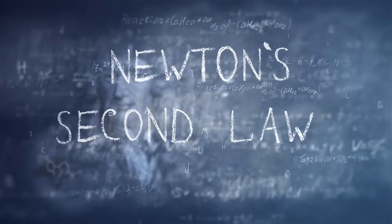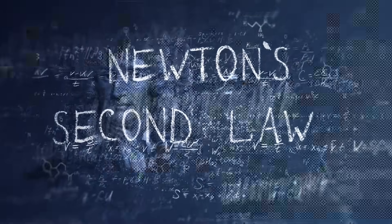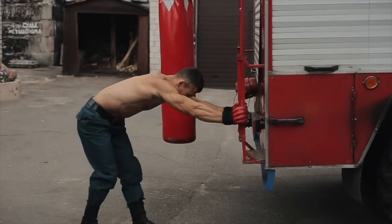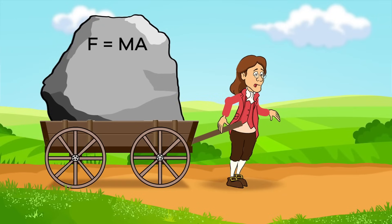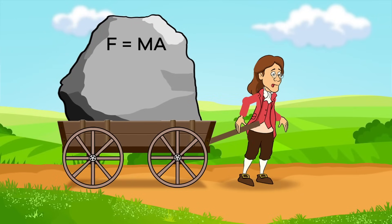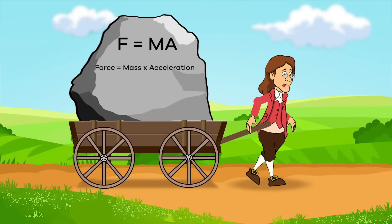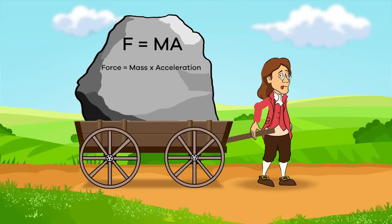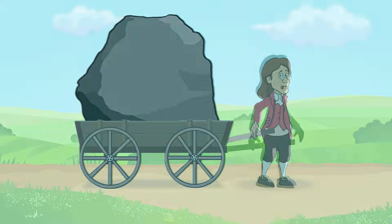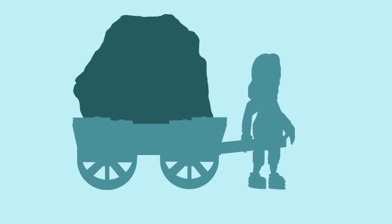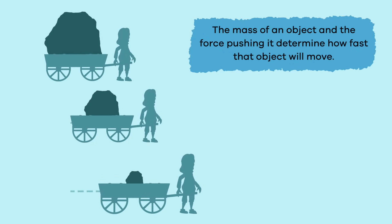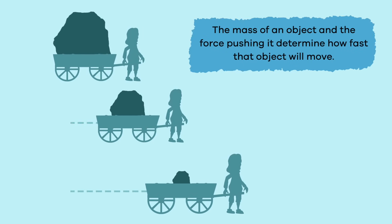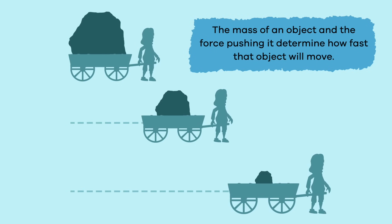Let's learn about Newton's Second Law of Motion. There is an equation that goes along with this law. This equation states that force equals mass times acceleration. That means the mass of an object and the force pushing it determine how fast that object will move.